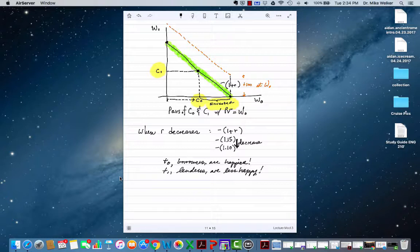Say the previous slope was negative 1.15, and now it's 1.10. In time period t0, you're able to borrow at a better price, so borrowers would be happier. The lenders are now less happy and they get less for their lending in that period.